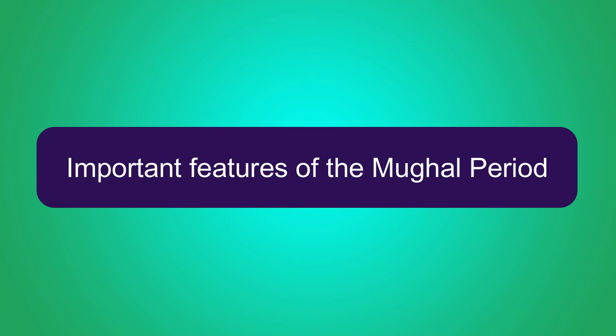These beautiful and captivating buildings still amaze the world. Let us discuss the important features of the Mughal period. Architecture, painting, literature, music, art and trade flourished in India during this period.